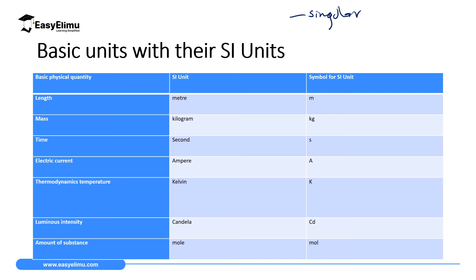The first basic quantity is length — its SI unit is meter, all letters in small, and the symbol is small m. Mass: its SI unit is kilogram, the symbol is kg — all in small letters. Time: SI unit is second, symbol is small s. Electric current: its SI unit is ampere, and A is capital — the symbol for SI unit is capital A. The reason some SI units start with capital letters is because they are named in honor of the person who discovered or described that quantity.